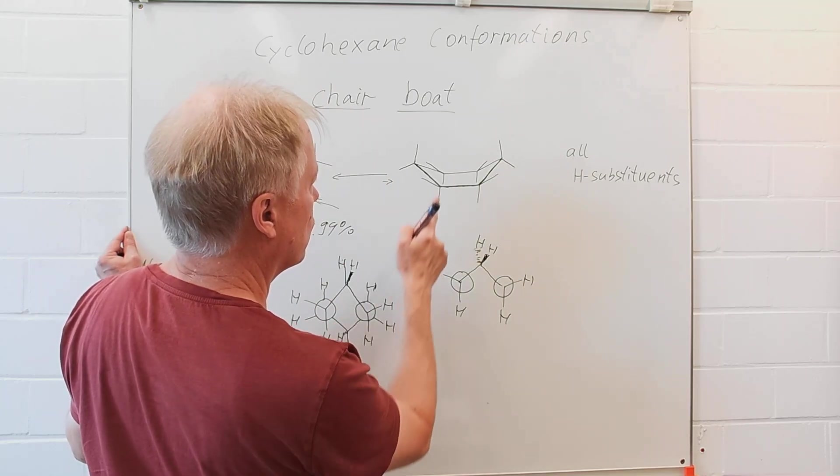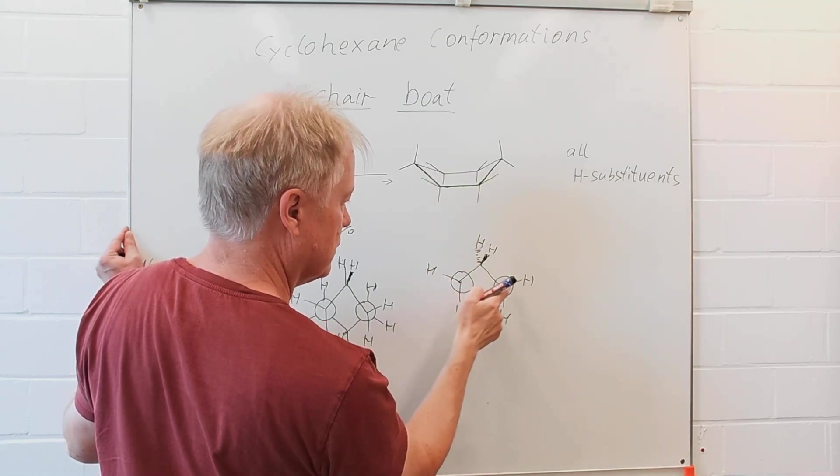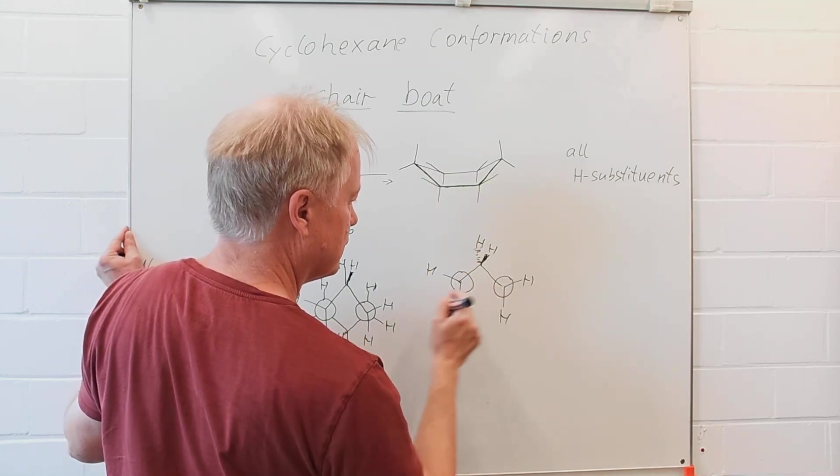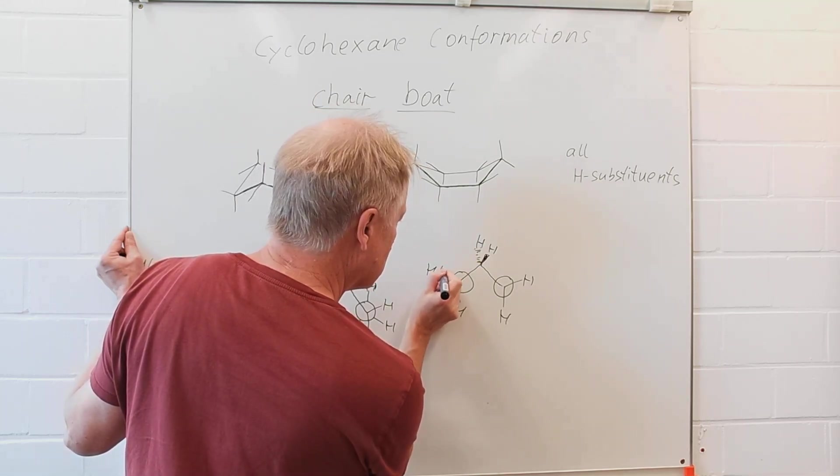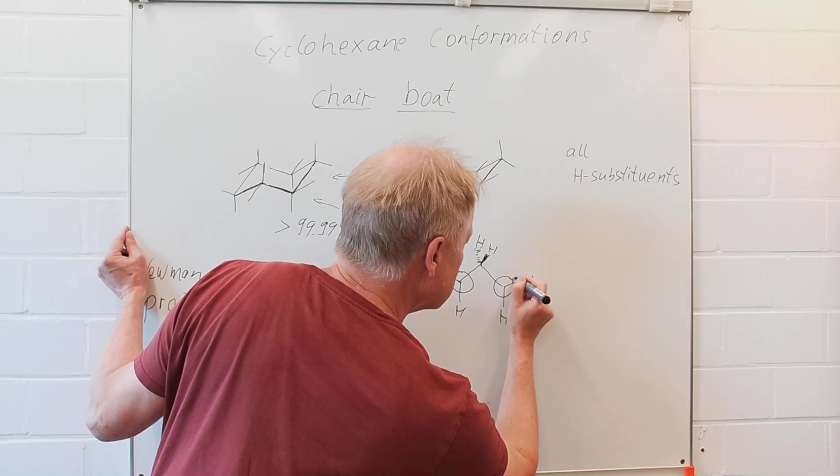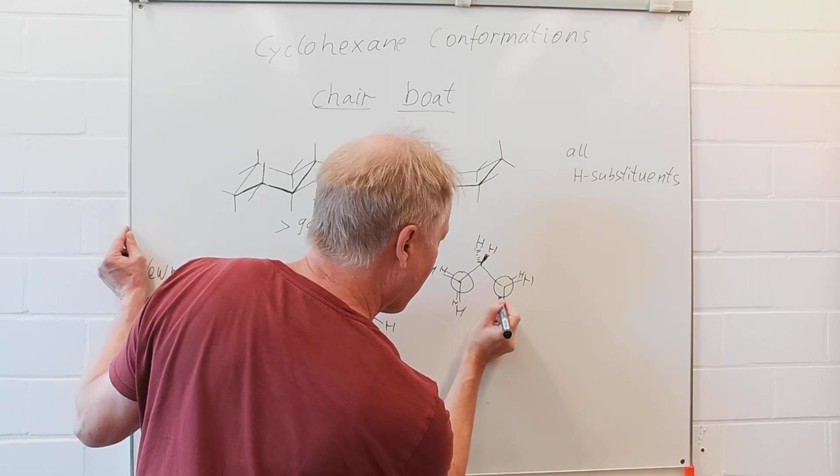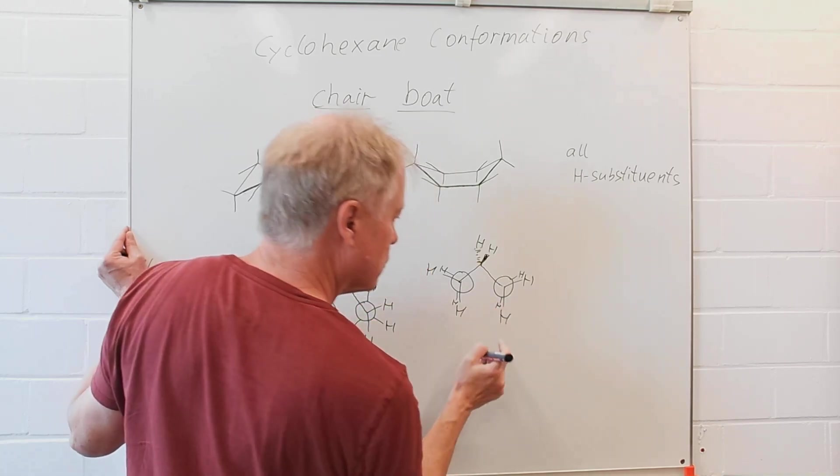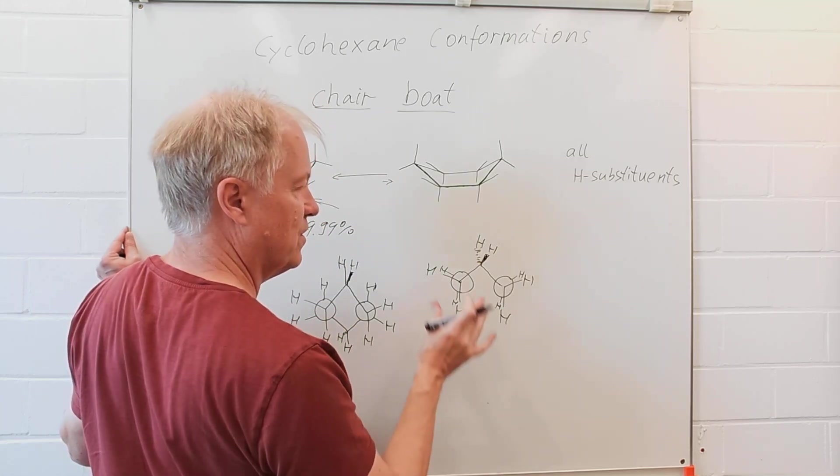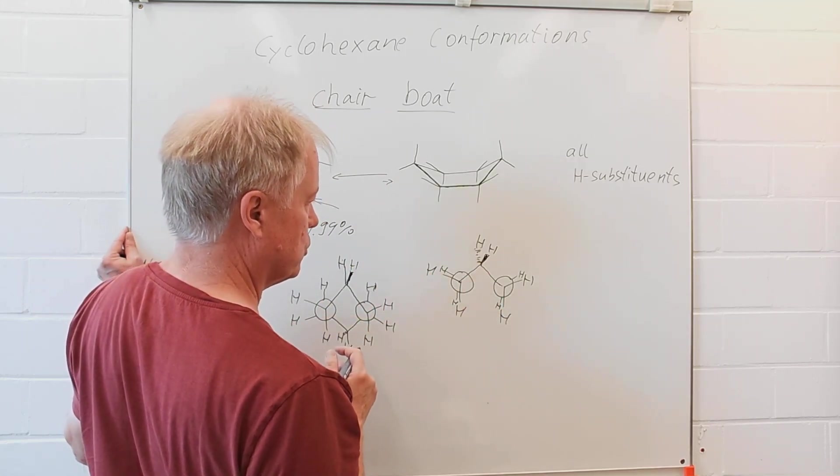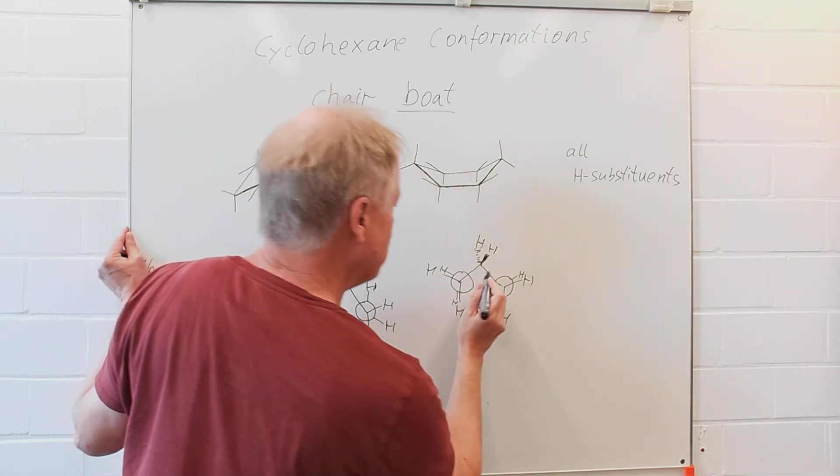So, what about those substituents at the carbons located behind the front carbons? Hydrogens, they are located ecliptically here, also just behind the front hydrogens. There is steric repulsion.